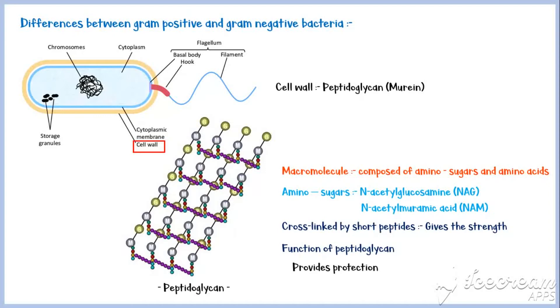Two major functions of peptidoglycan are to provide protection to the bacterial cell and to define the shape of the bacteria.